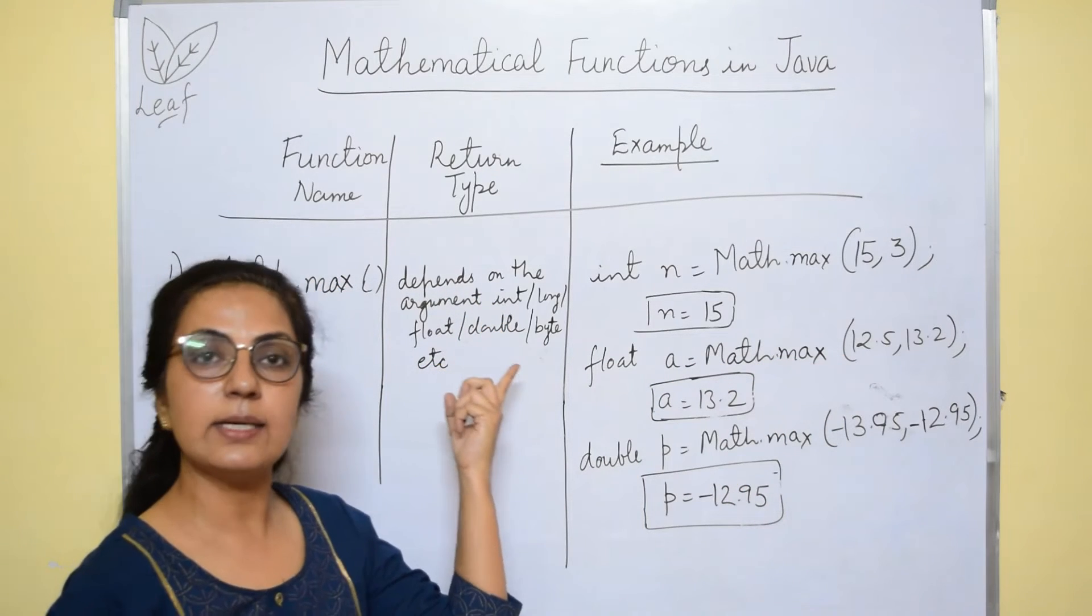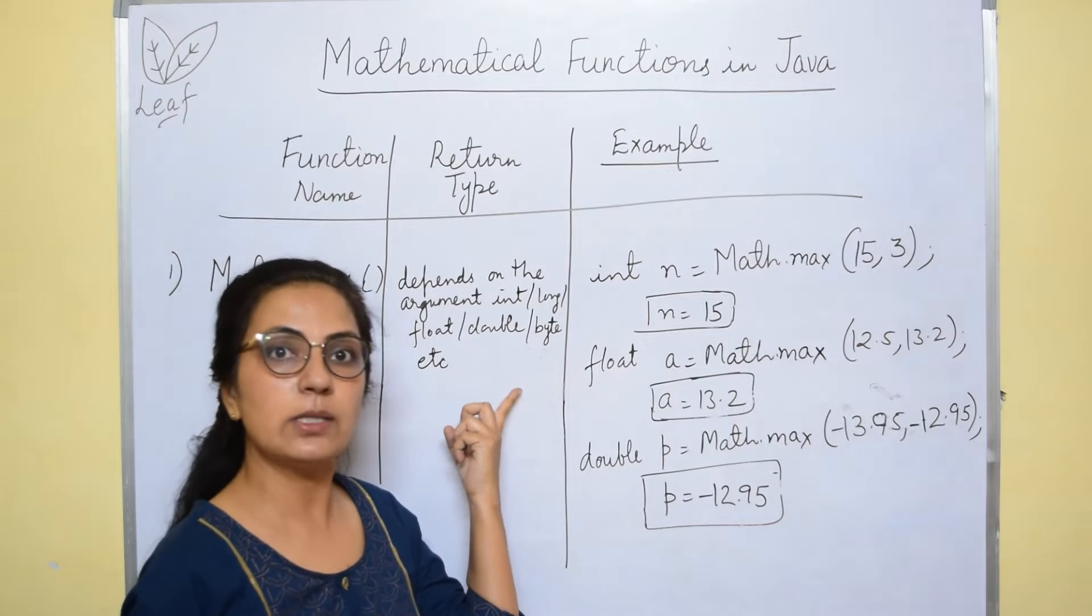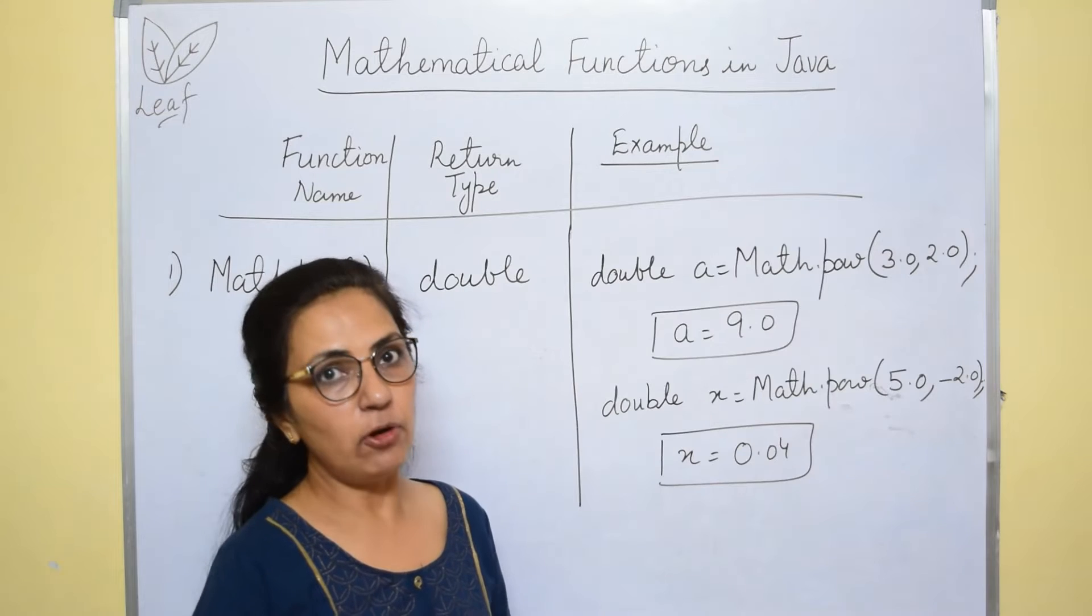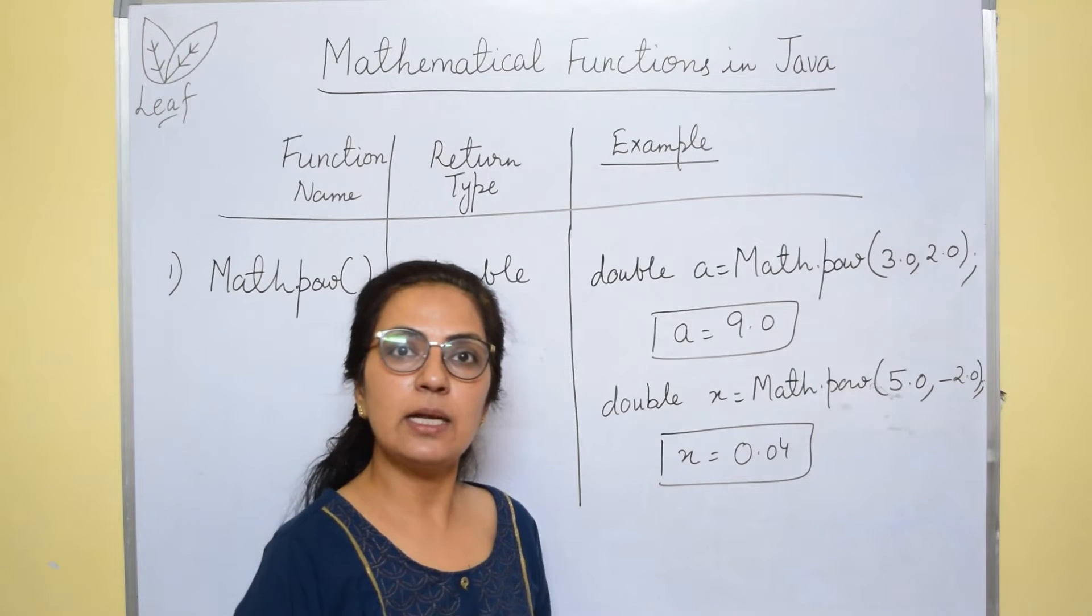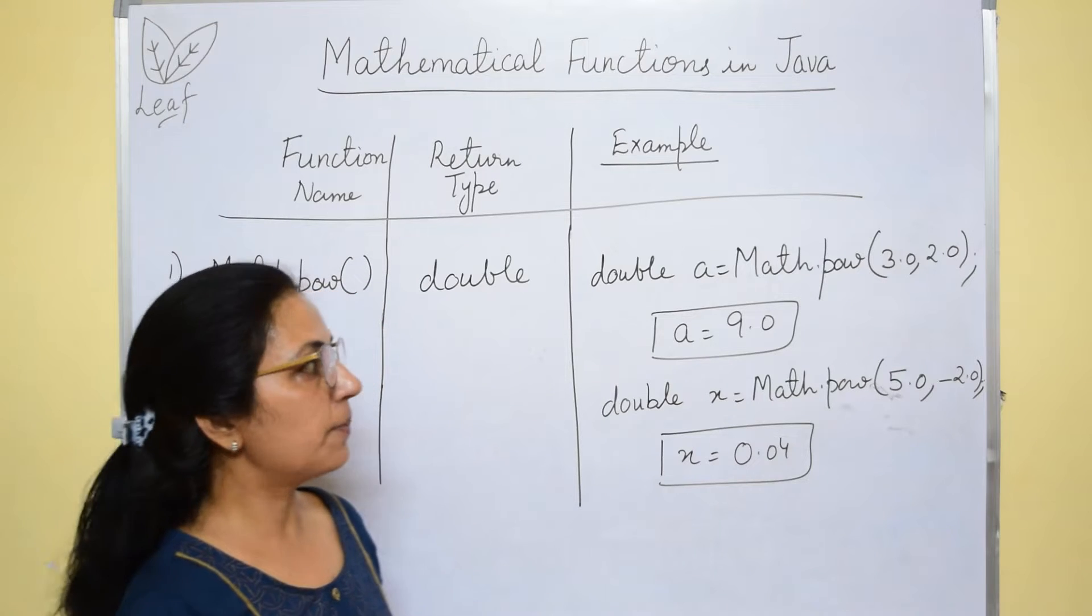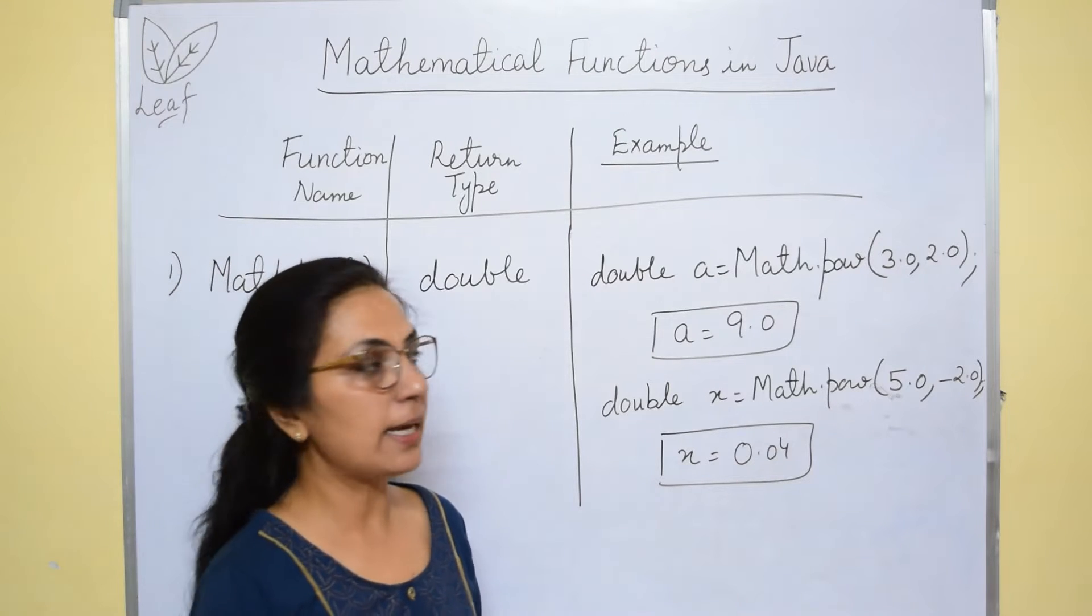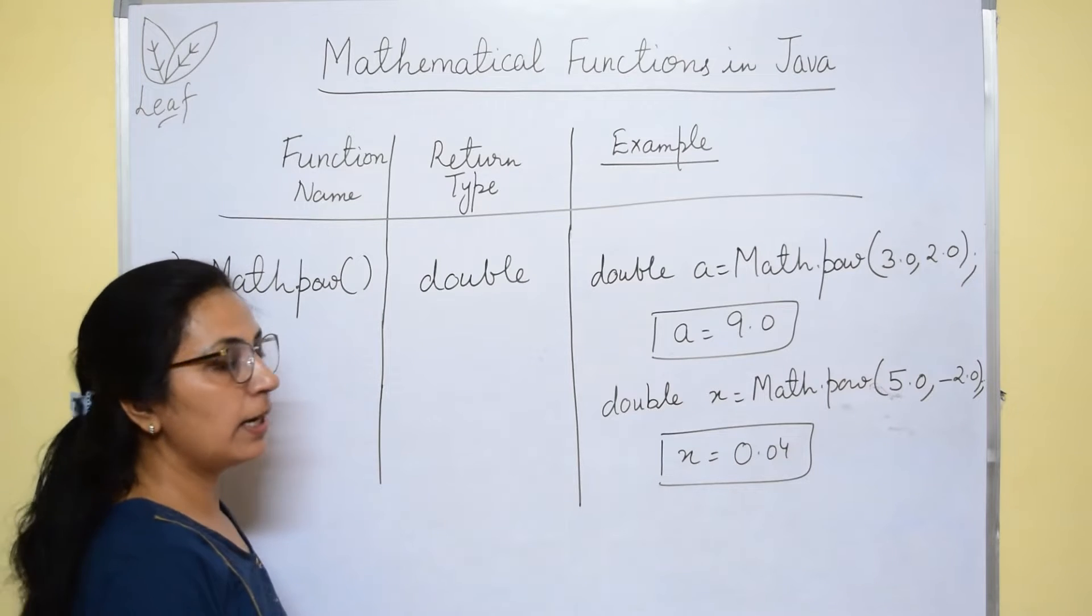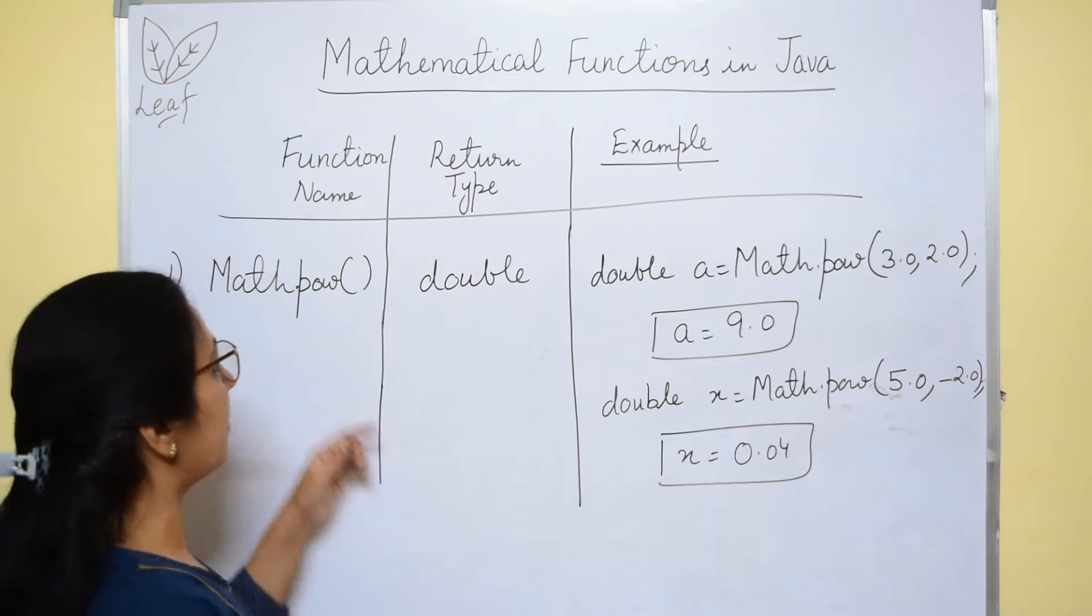If we are giving integers, answer will be in int, float then float. If it is byte type, then answer will be in byte type. Before moving forward, I will just tell you that we have one PDF also which is given in the description box. Please download that and solve that and answers are also there. For any help, you can comment in the comment entry section.